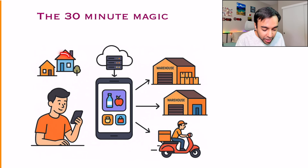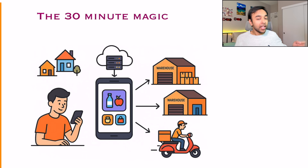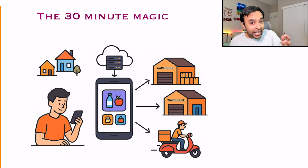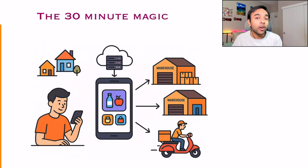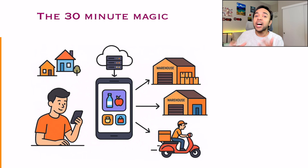So first of all, what is this 30-minute magic? If you are unaware about quick commerce apps, what usually happens is you are sitting in the comfort of your home. You have a certain app and there are a lot of items available on it. It started with grocery items like produce and all those things, but now more and more items are getting added to the catalog day by day.